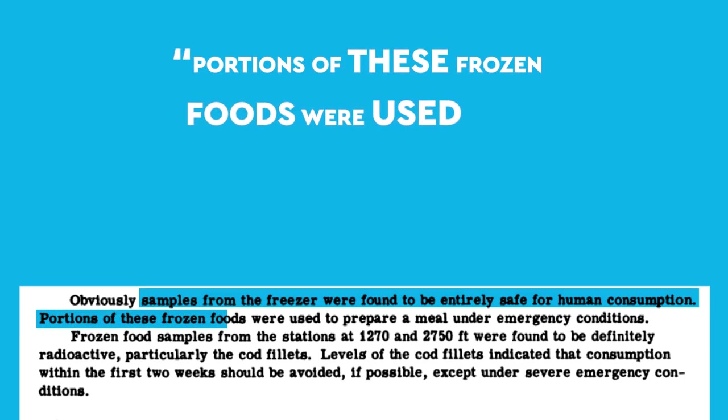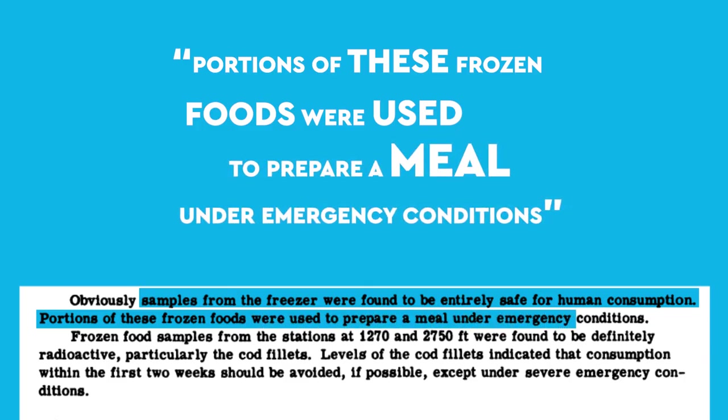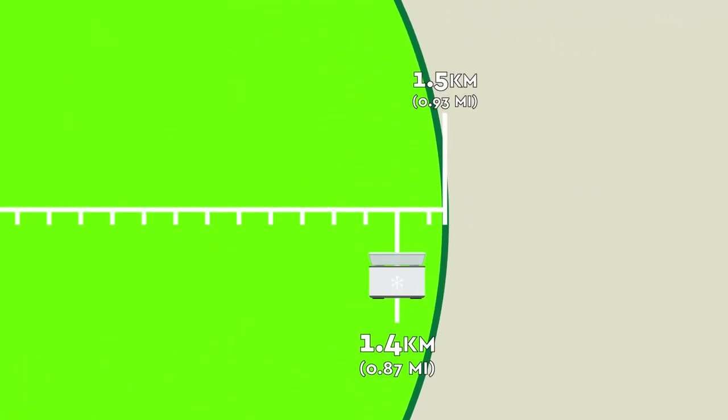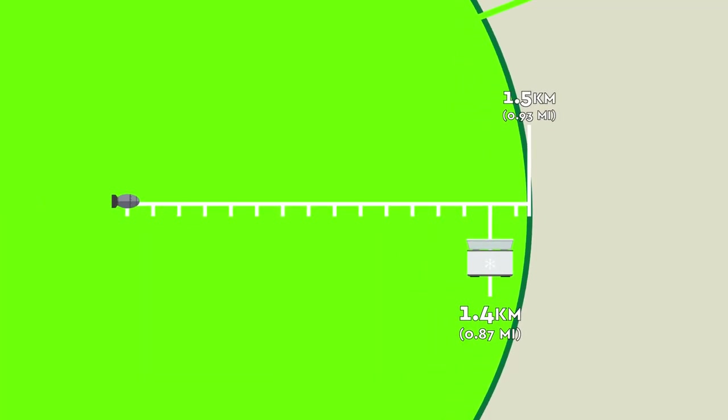Portions of these frozen foods were used to prepare a meal under emergency conditions. The freezer would definitely have been inside the radiation radius of the bomb, which would have reached 1.5 kilometers from the detonation point.